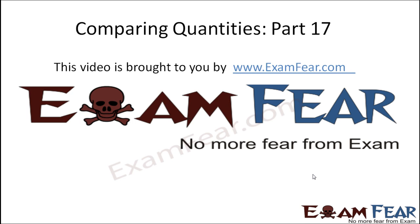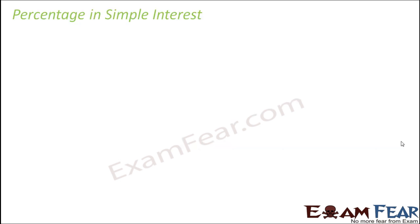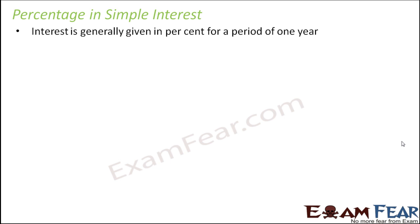This video on comparing quantities part 17 is brought to you by examfear.com. Let's see what is percentage in simple interest — how is interest given back to the bank. You give some extra money to the bank, but who decides how much extra money you have to give? Obviously the bank, because the bank has given you the money, so the bank will decide. This interest is generally given in percent for a period of one year.